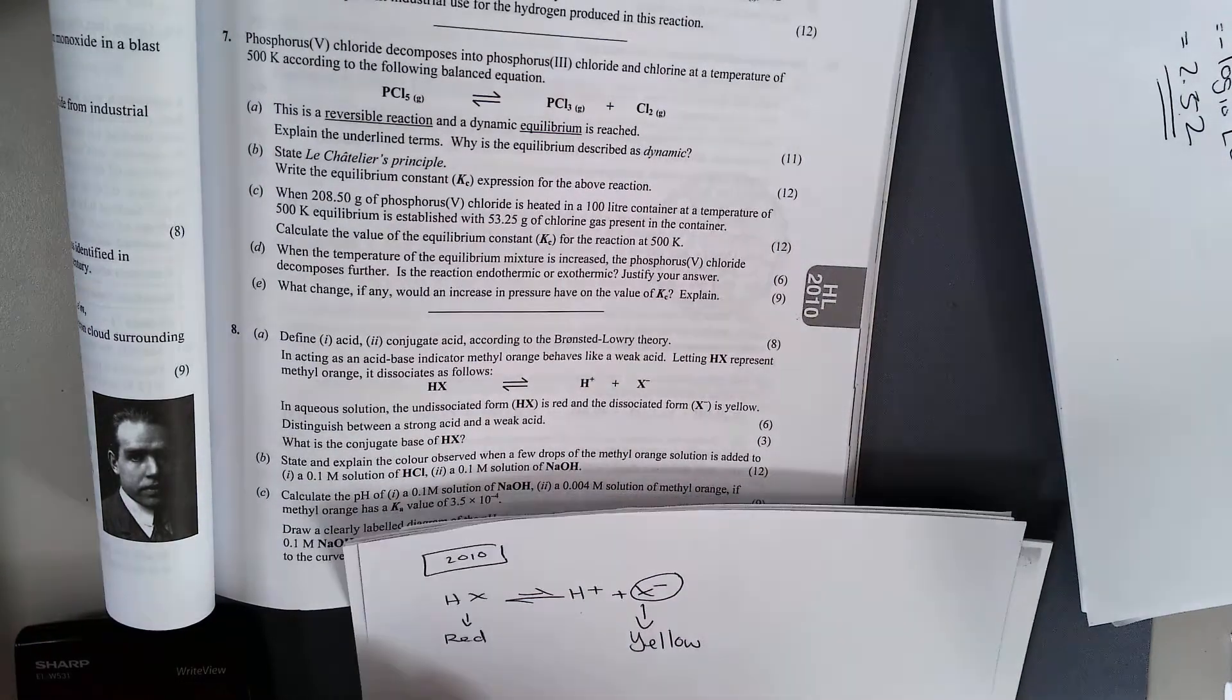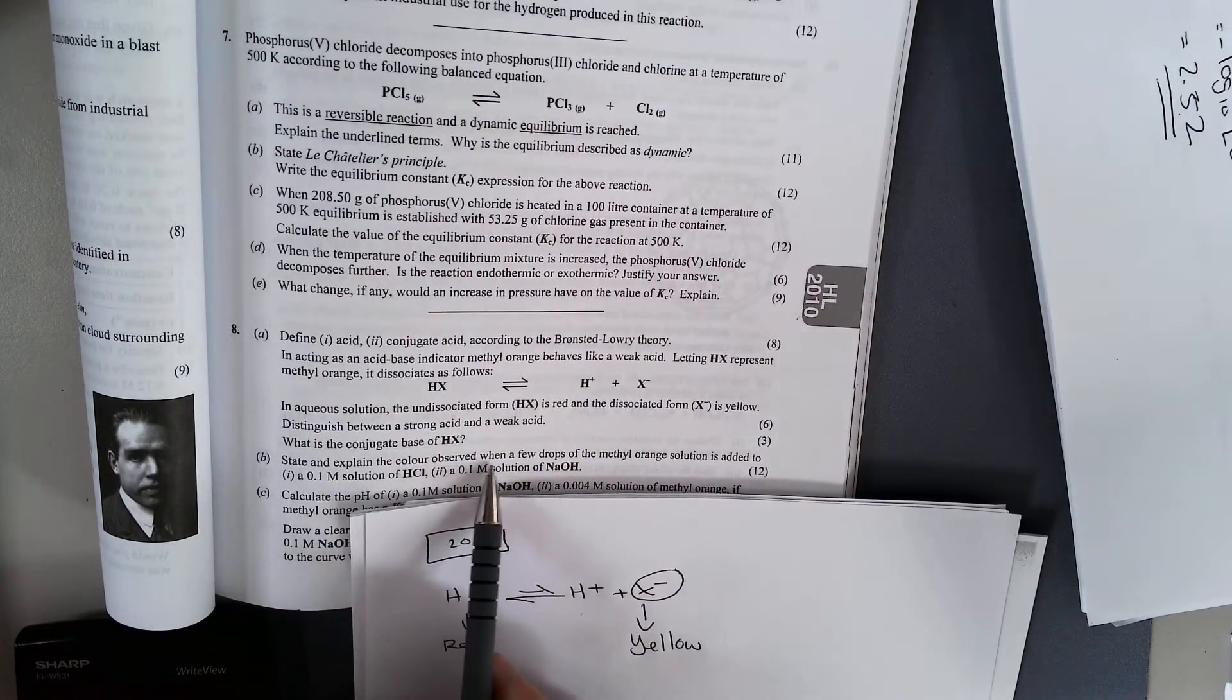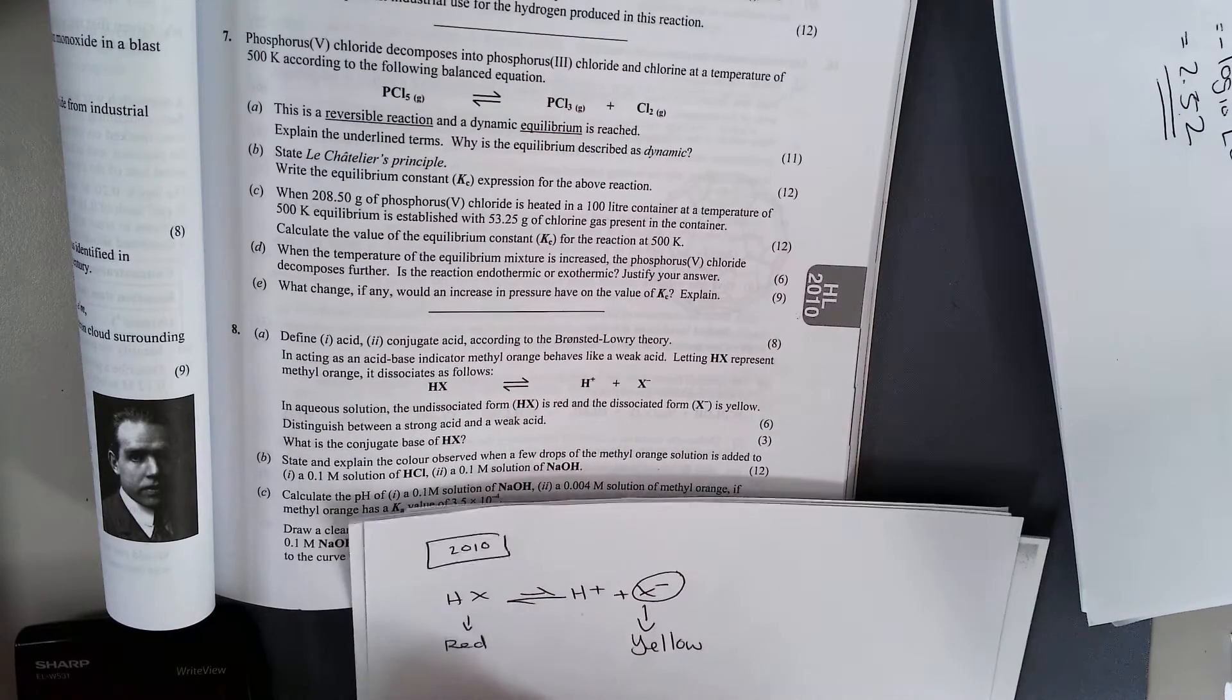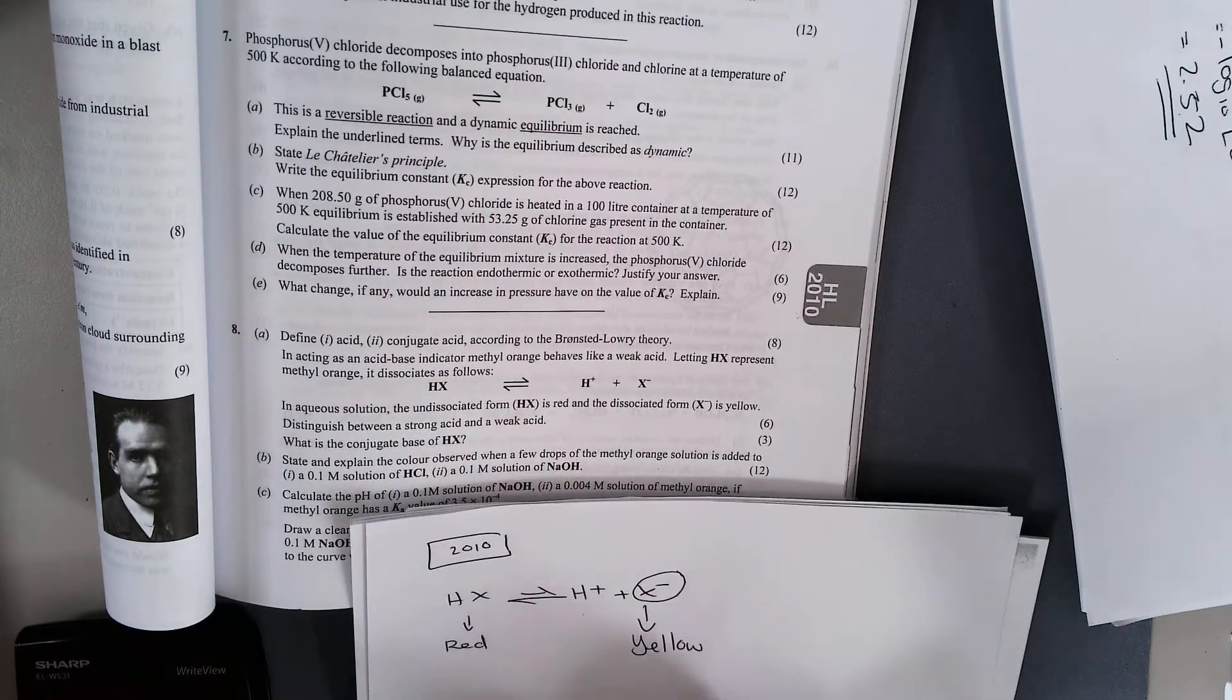Part B: we're asked to state and explain the color observed when a few drops is added to, firstly, HCl, and secondly, NaOH.